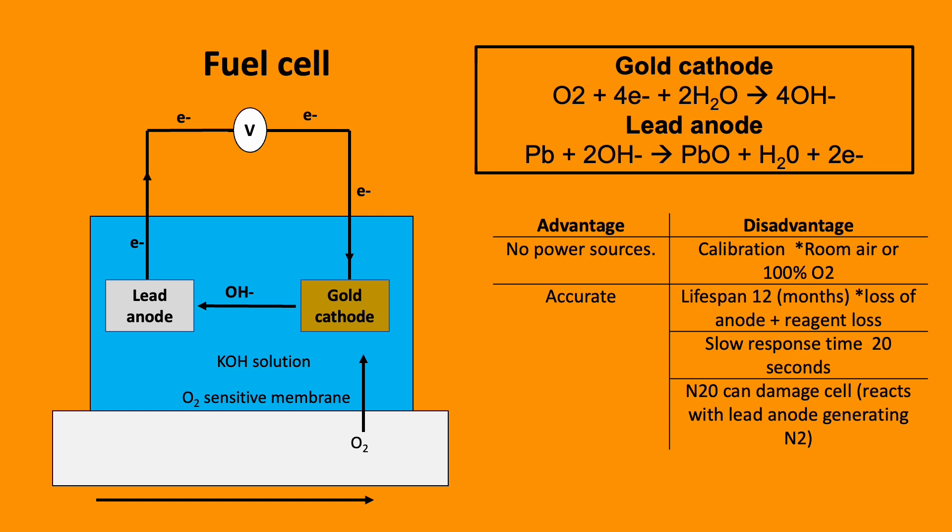How does it work? Oxygen diffuses across the O2-sensitive membrane and binds to the gold cathode. A reduction reaction occurs producing hydroxyl ions which move through the electrolyte solution and react with the lead anode. An oxidation reaction occurs at the anode, producing electrons which move around the circuit. Oxygen consumption is proportional to the current generated.